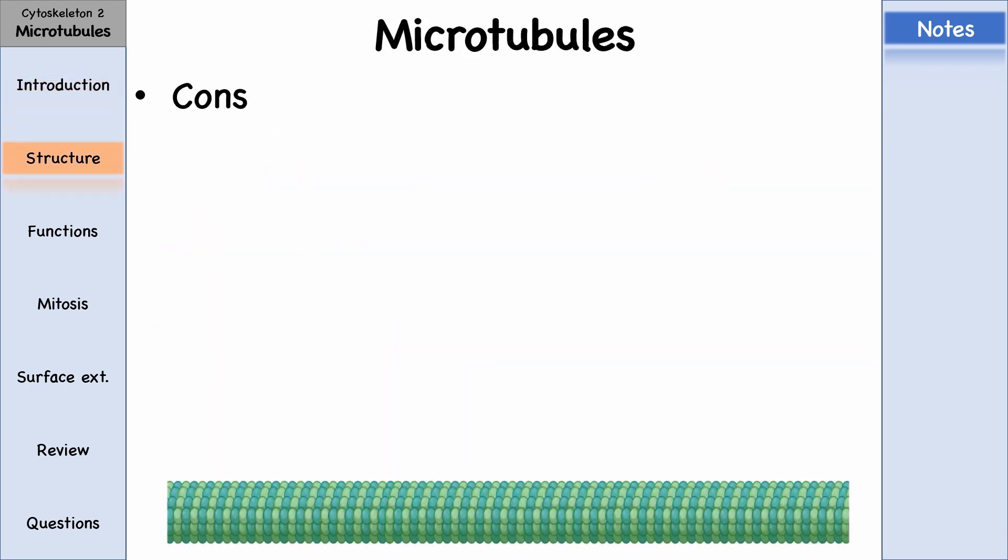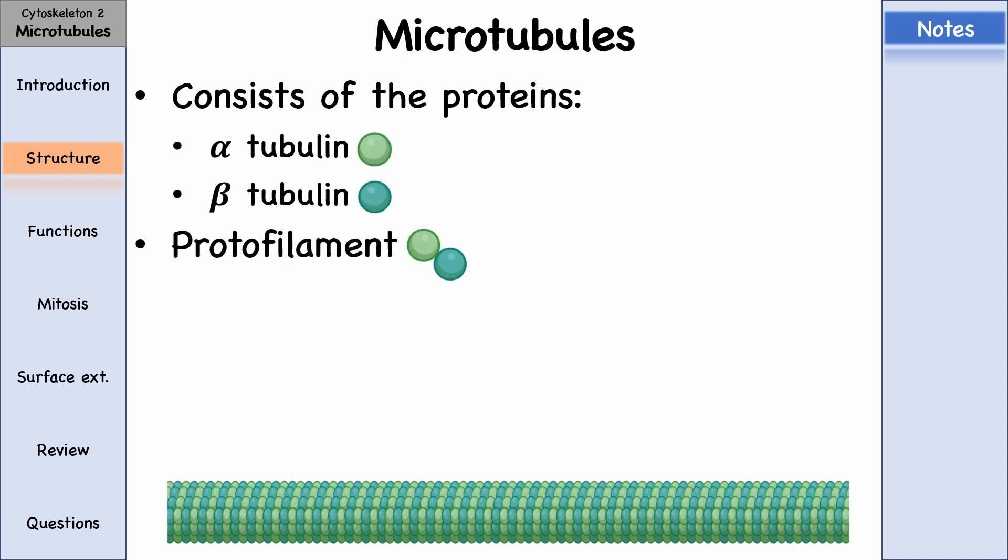The microtubules consist of proteins called alpha-tubulin and beta-tubulin that join to form a protofilament, and 13 of these protofilaments form one microtubule. They have a positive end and a negative end. The negative end begins with alpha-tubulin, and the positive end ends with beta-tubulin.